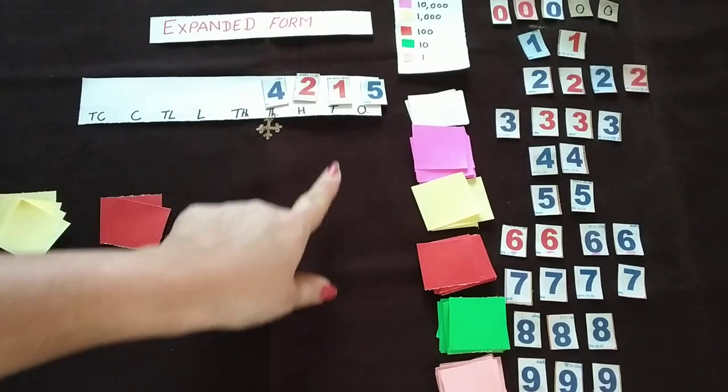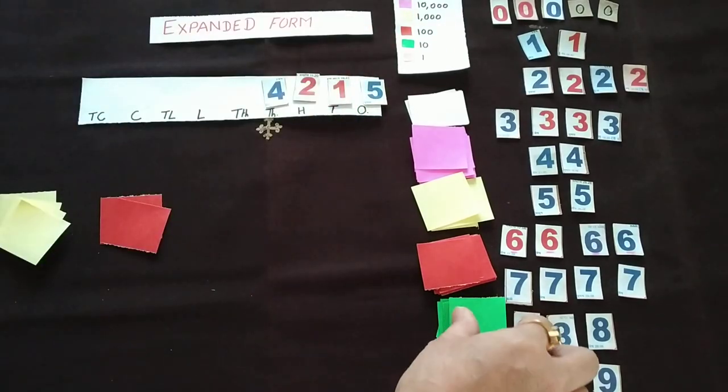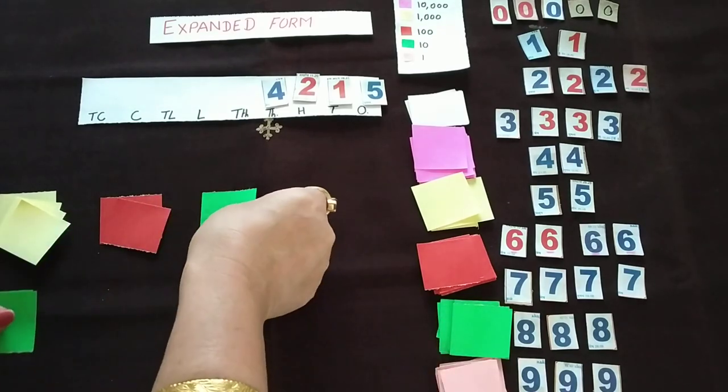Then the next one is 10. So 10 means green color. So this green color sheet will be there, one sheet.